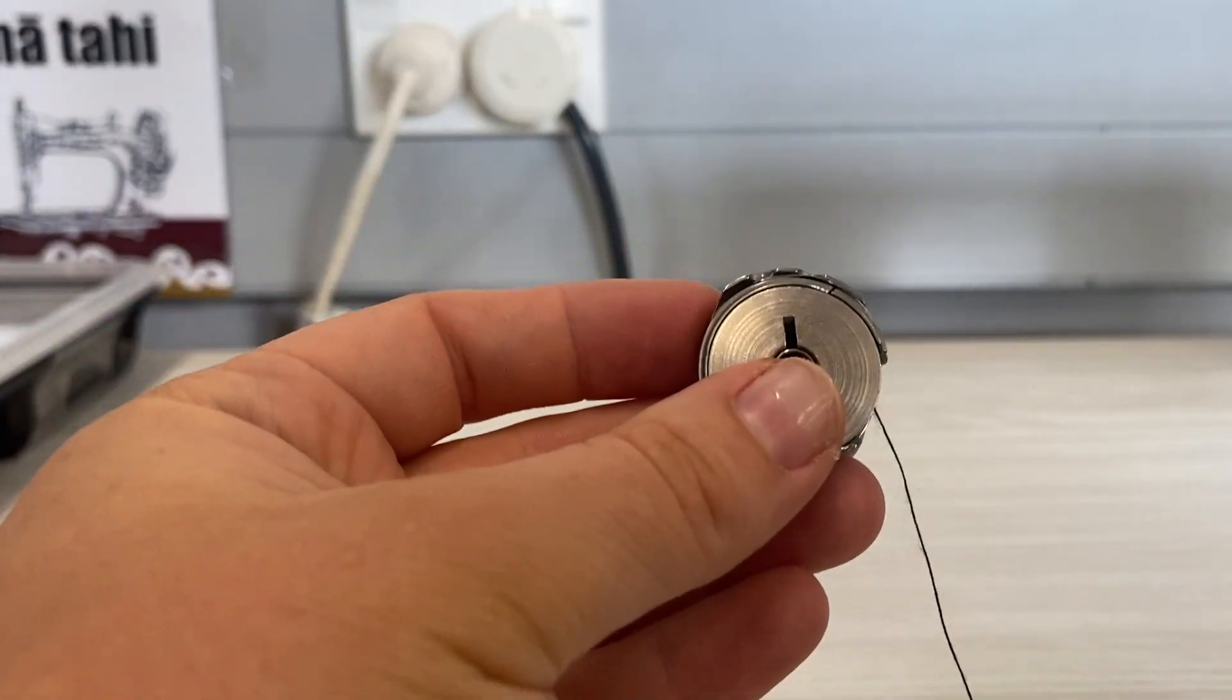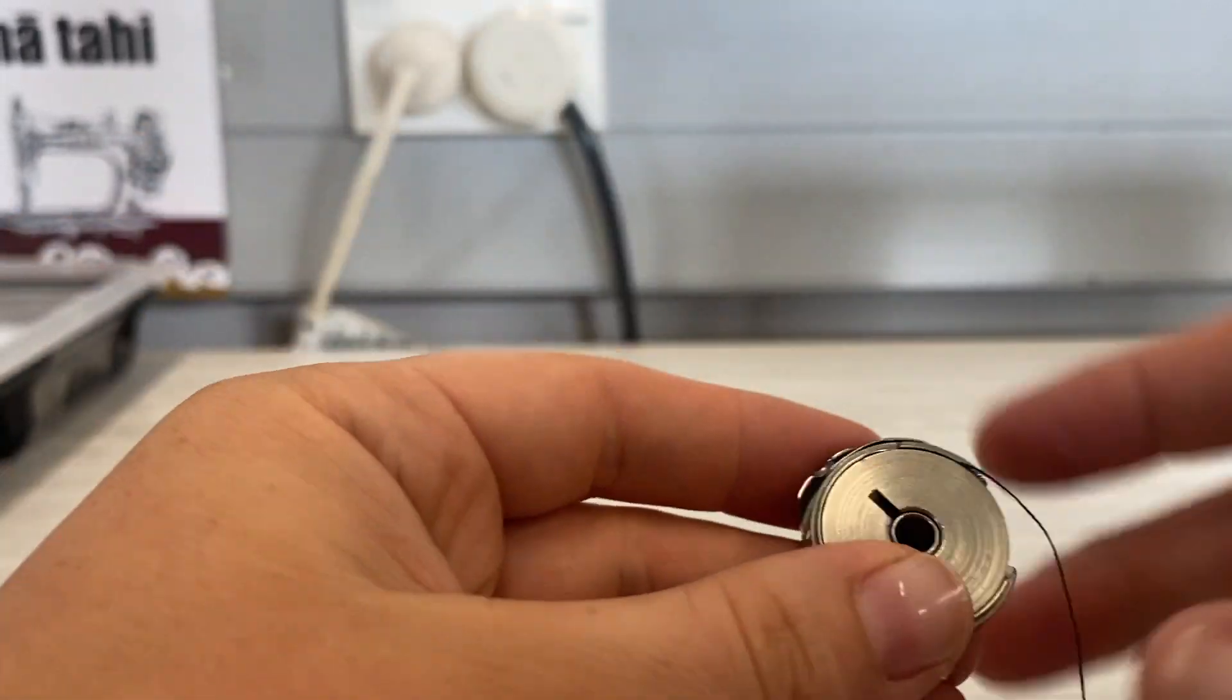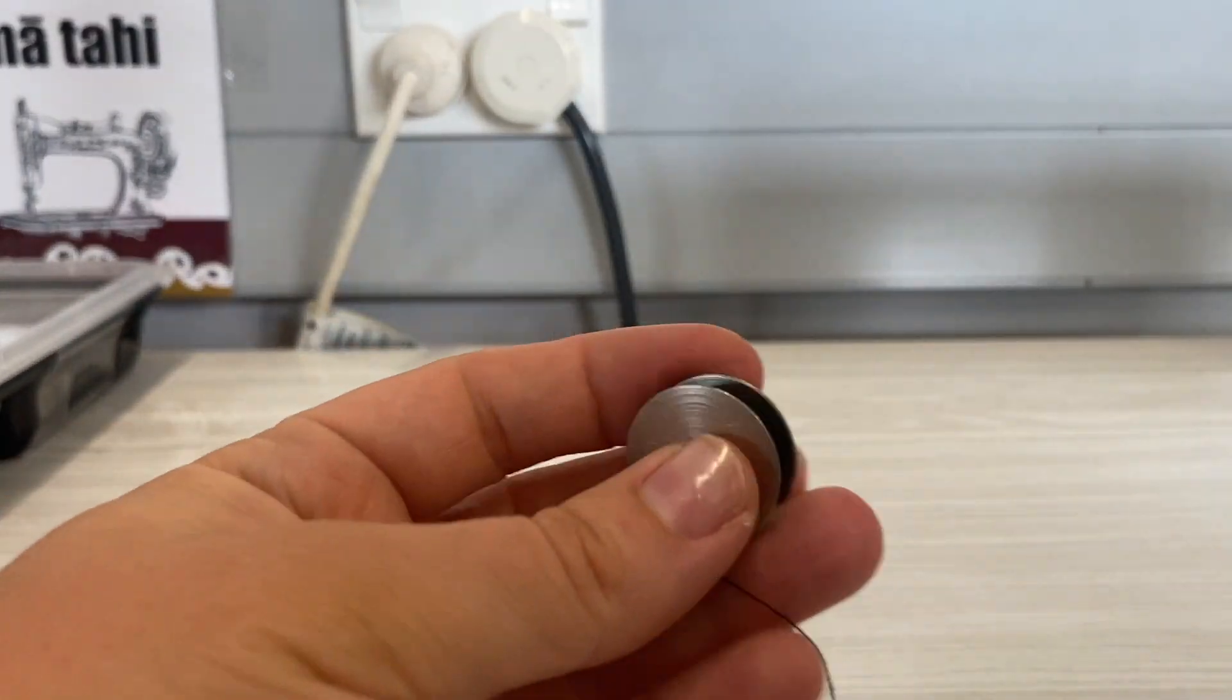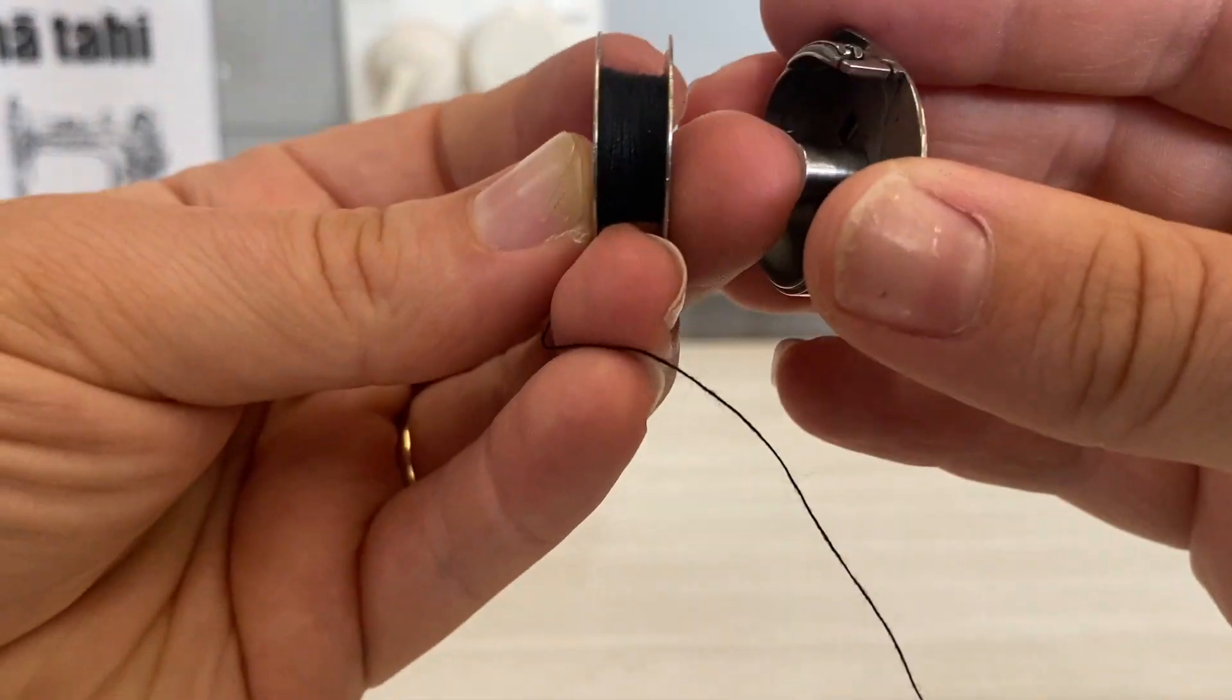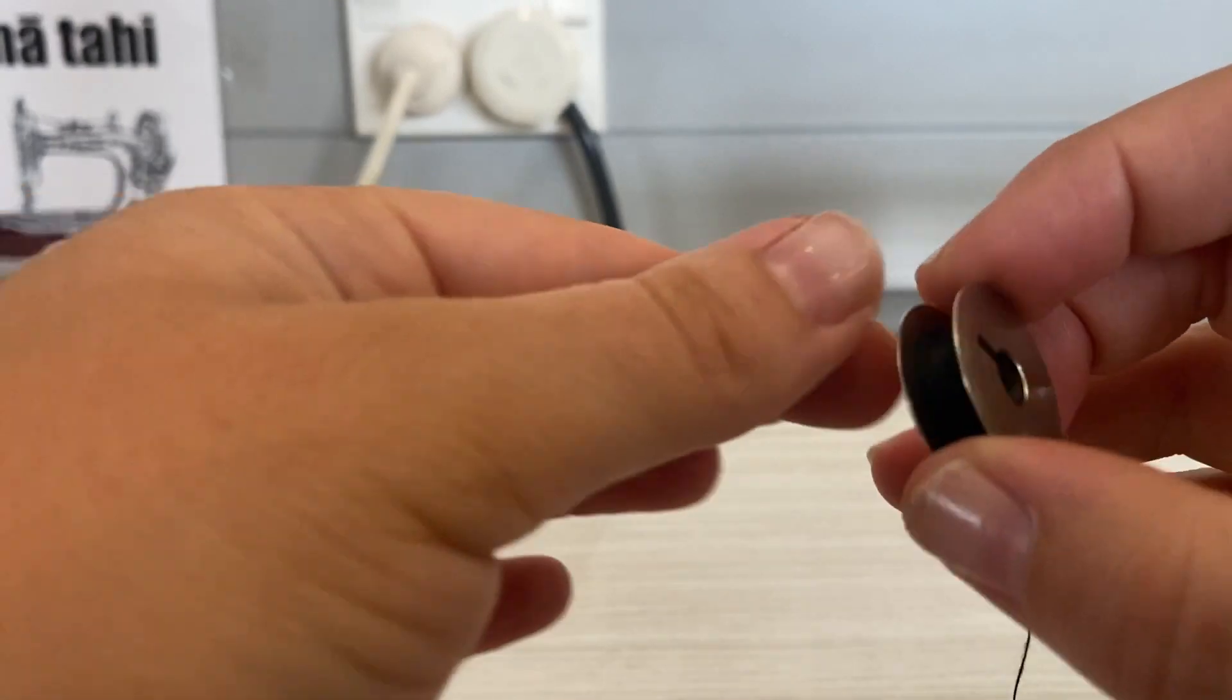To get the bobbin out of the bobbin case, you can just tip it out. You can see there how thin that is. To put it back in, you're going to do the check to make sure it's running clockwise.